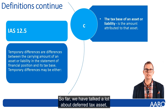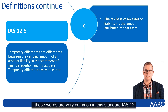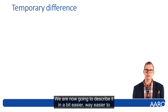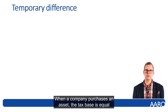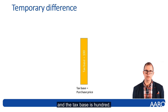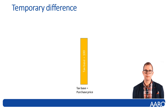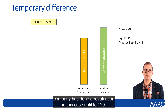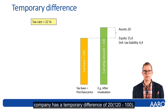So far we have talked about deferred tax assets, deferred tax liability, temporary differences, etc. Those words are very common in the standard IAS 12. We are now going to describe it in an easier way to understand what it actually is. When a company purchases an asset, the tax base is equal to the purchase price. In this example, the purchase price and the tax base is 100. The company can, during the business, make changes in the booked value. Looking to the right, you can see that the company has done a revaluation — in this case, to 120. So the carrying amount is 120, which means the company has a temporary difference of 20 (120 minus 100).